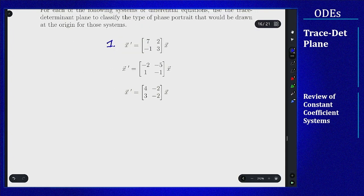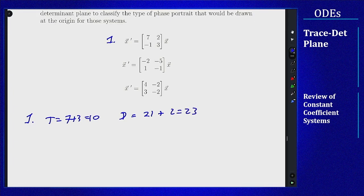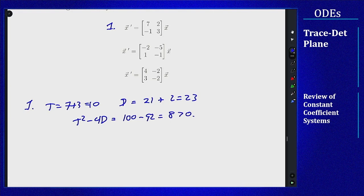For number one, we have a trace of 7 plus 3 or 10, and a determinant of 21 plus 2 or 23. So t is positive, d is positive, and t squared minus 4d is 100 minus 92, which is 8, which is positive. So t squared minus 4d being positive means I am under the parabola, and I have t positive and d positive. So I'm above the axis, I'm off to the right, I'm under the parabola — therefore this will be a nodal source.